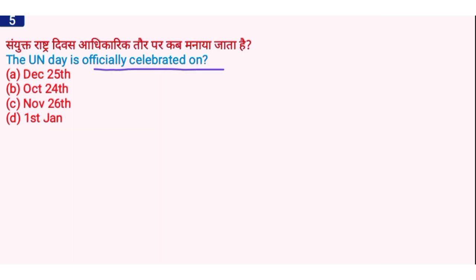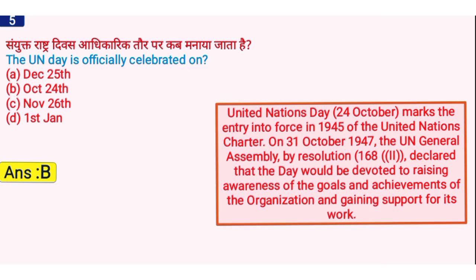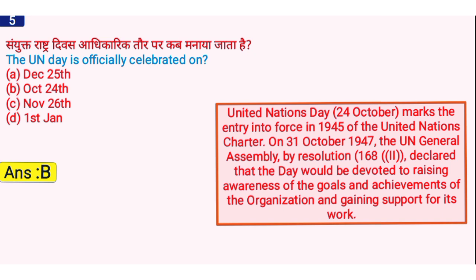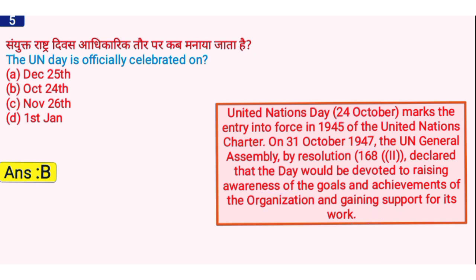The UN Day is officially celebrated on which date? The right answer is option B, 24th October. United Nations Day is celebrated every year on 24th October, marking the entry into force in 1945 of the United Nations Charter. On 31 October 1947, the UN General Assembly by Resolution 168 declared that the day would be devoted to raising awareness of the goals and achievements of the organization and gaining support for its work.